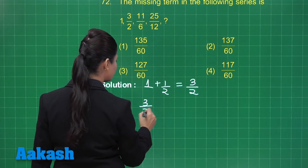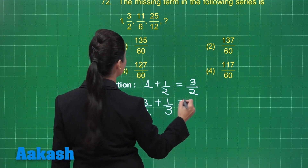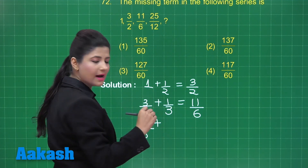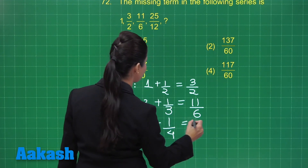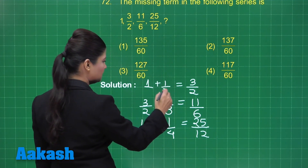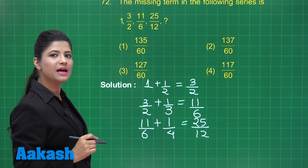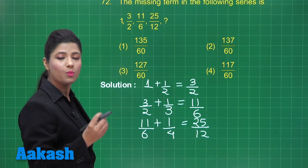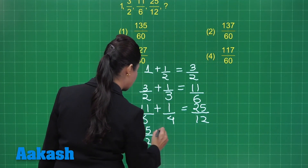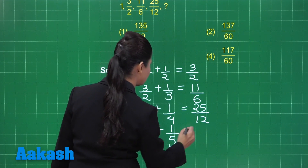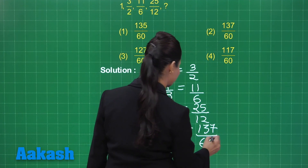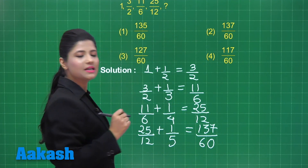Next, when you consider 3/2 and add 1/3 to it, you obtain 11/6. When you consider 11/6 and add 1/4 to it, you obtain 25/12. The pattern is: we add 1/2, then 1/3, then 1/4 — so in the next step we will be adding 1/5. Taking 25/12 and adding 1/5, on simplification you obtain 137/60. This is the next term of the given sequence.